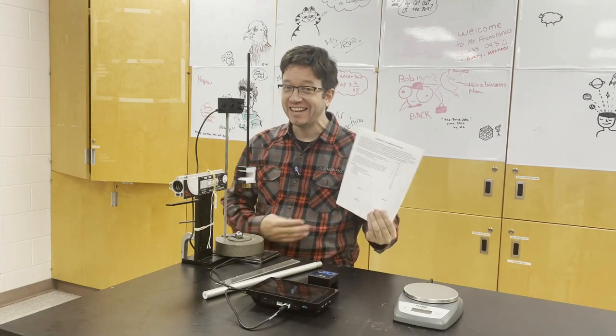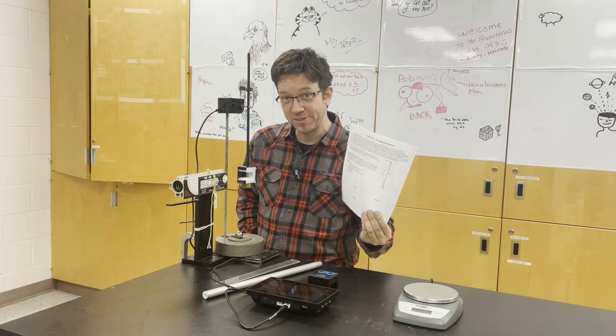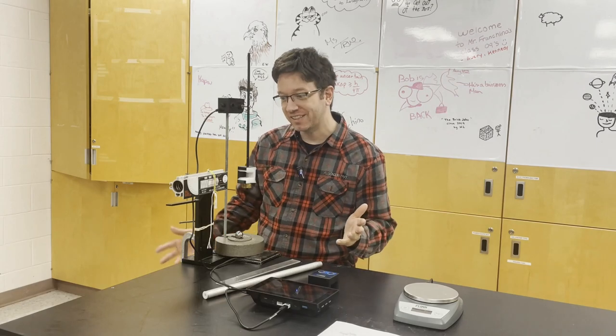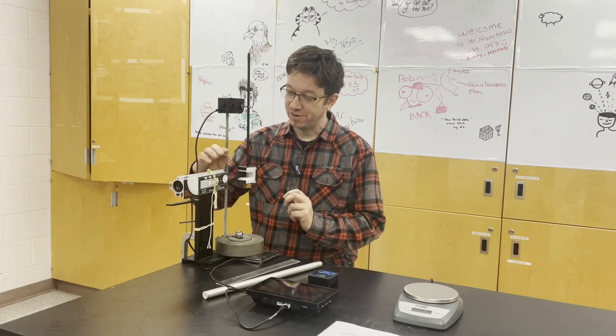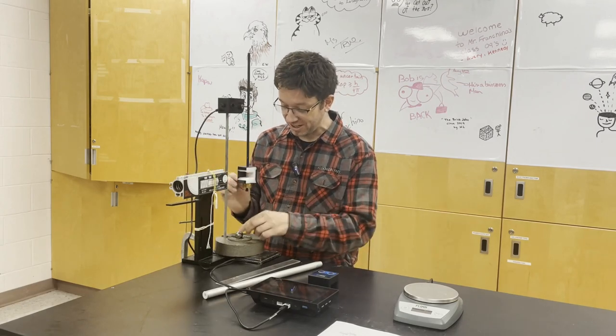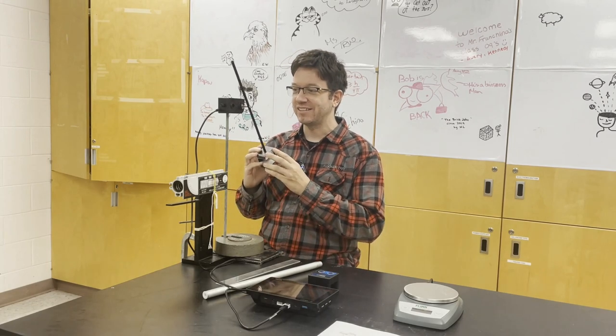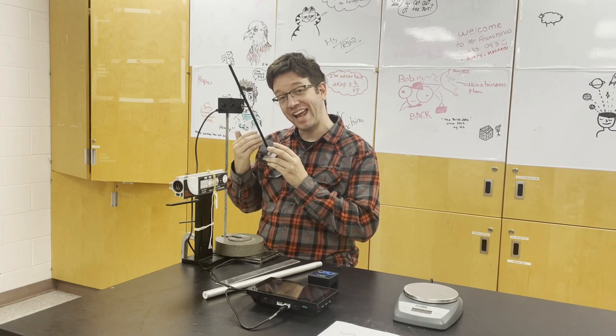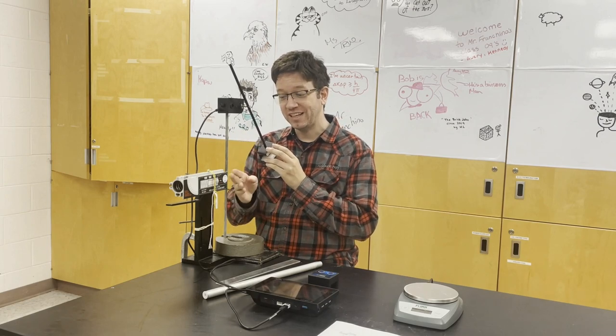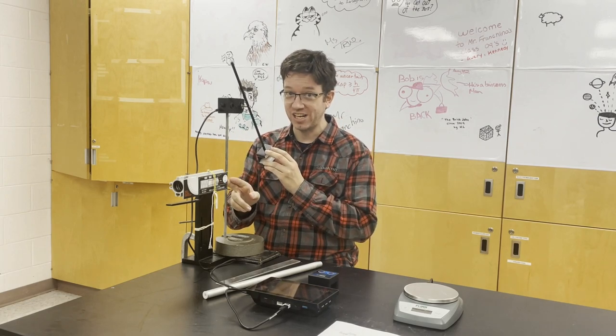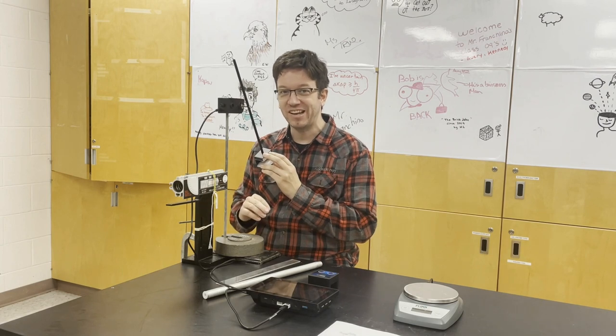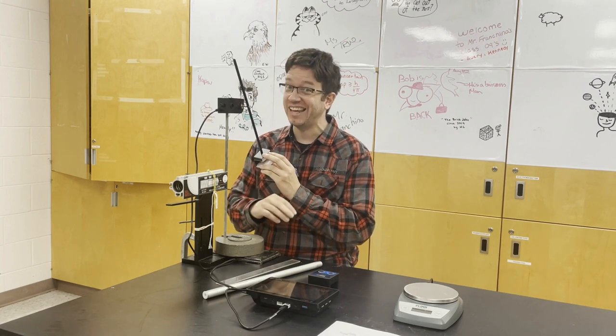If you want to follow along, the handout is available for free in the description. The main idea of this lab is for this projectile launcher to launch a projectile into this pendulum, and then it rises to a certain angle. The angle it rises to will tell us the initial velocity of the projectile. I'll do one sample calculation of how we do that with the data at the end of the video.